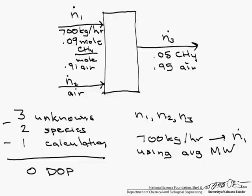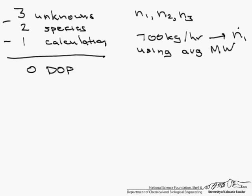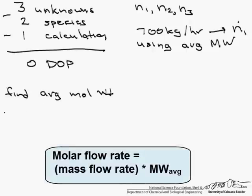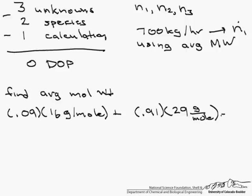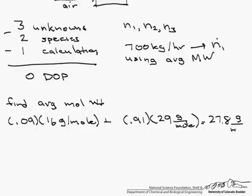So we have zero degrees of freedom, which means that we can then solve this problem. So the first thing let's do is find the average molecular weight. So we take our 0.09 mole percent of methane and multiply it by the molar mass of methane, which is 16 grams per mole. And we add that 0.91 mole percent of air, and the molar mass of air is 29 grams per mole.